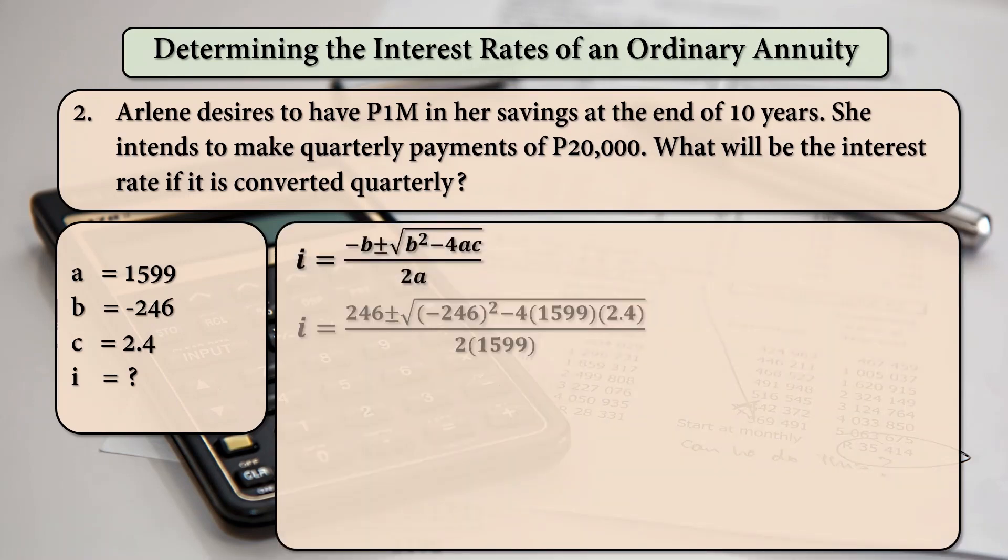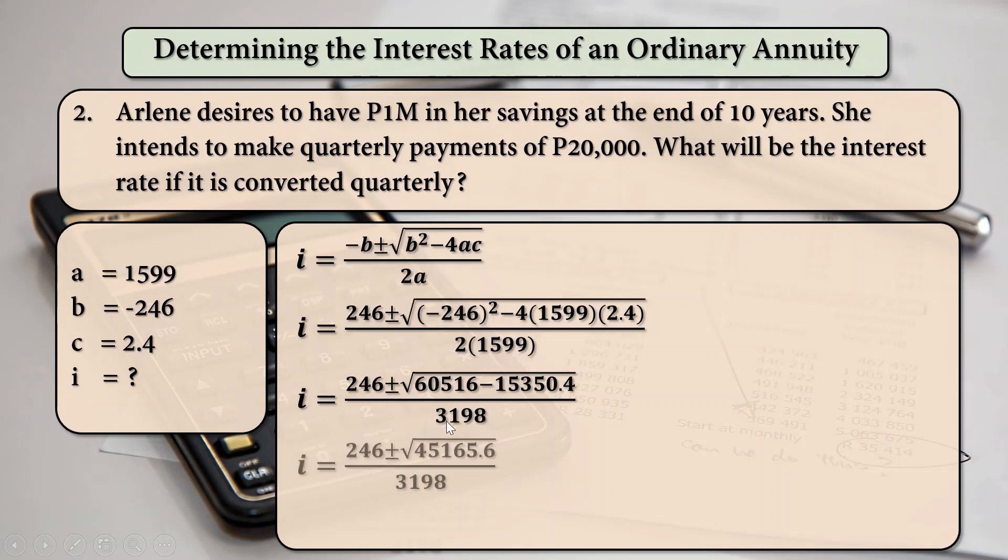Using the quadratic formula, B is 246. Since B is negative, negative times negative is equal to positive. So, our first number here is positive 246. Under our square root sign, negative 246 squared minus 4 times 1599 times 2.4 all over 2 times 1599. Negative 246 squared is equal to 60,516. And then 4 times 1599 times 2.4 is equal to 15,350.4. And then 2 times 1599 is equal to 3198. Subtracting these two under our square root sign, that is 45,165.6. And then taking the square root of that number, that will be equal to 212.522.